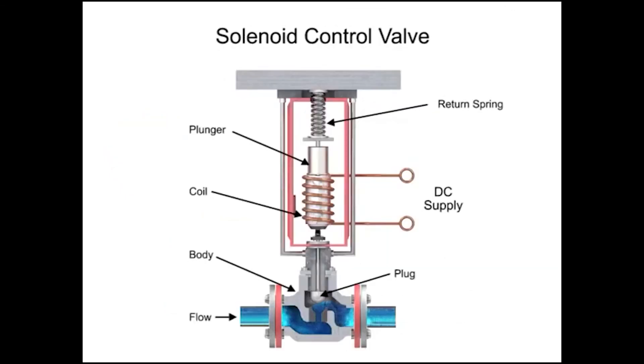For on-off control of the valve, a solenoid is used to actuate the valve to a fully closed or fully open position. Applying current to the coil generates a magnetic field that moves the plunger downward against the return spring. With zero current applied to the coil, the spring pulls the plunger upwards to the fully open position for a normally open state control valve.